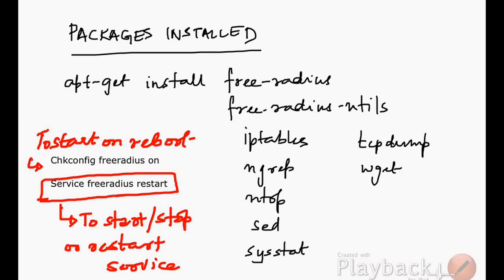There are a lot of packages that we need to install on the RADIUS server. First, execute the command apt-get install freeradius and freeradius-utils. We're talking about Ubuntu here, but if it's some other version it might be yum for Fedora or another distribution.